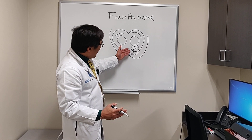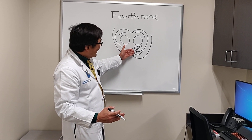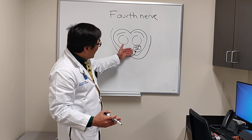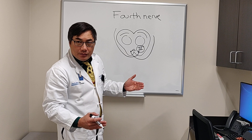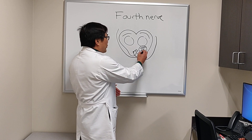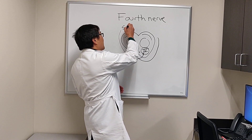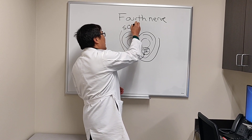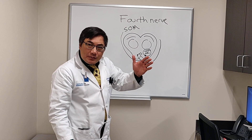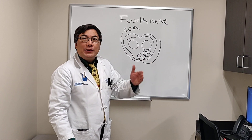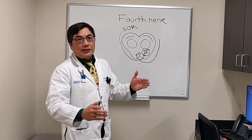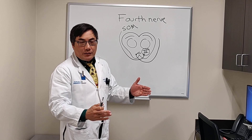When dealing with a dorsal brainstem lesion, you have to think about a contralateral fourth nerve palsy. The fourth nerve has only one job: it innervates a single muscle, the superior oblique muscle. Its only function is to innervate the superior oblique.